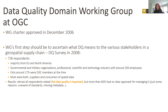At OGC there are several Standards Working Groups and Domain Working Groups. Standards Working Groups are set up ad hoc when a new request for a standard arises, with members joining efforts to produce the standard. Domain Working Groups aim at facilitating the work of standards groups in certain topics. One such topic with a Domain Working Group is data quality — covering spatial data quality, quality of service, and quality more generally.